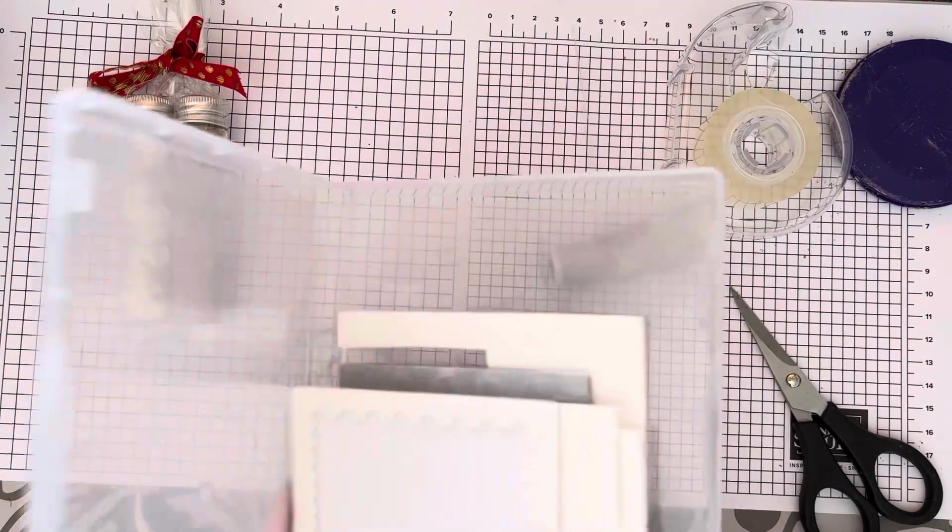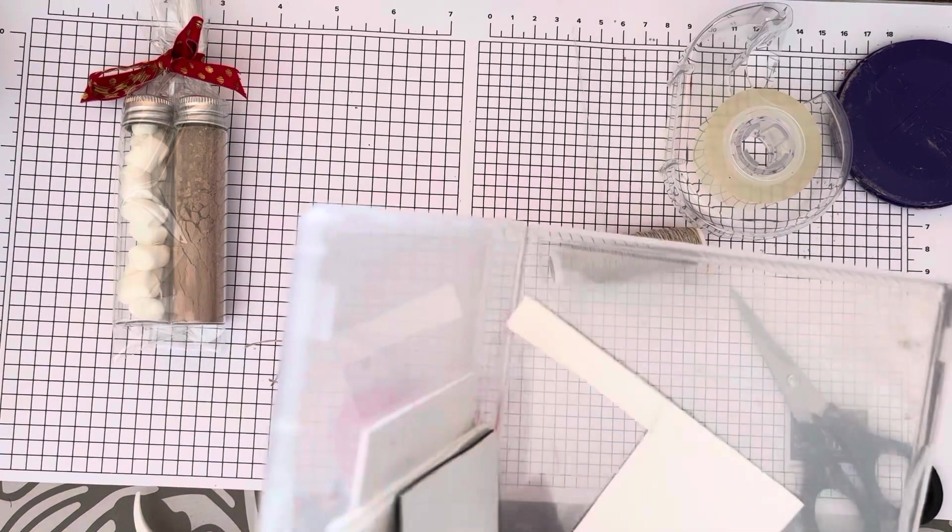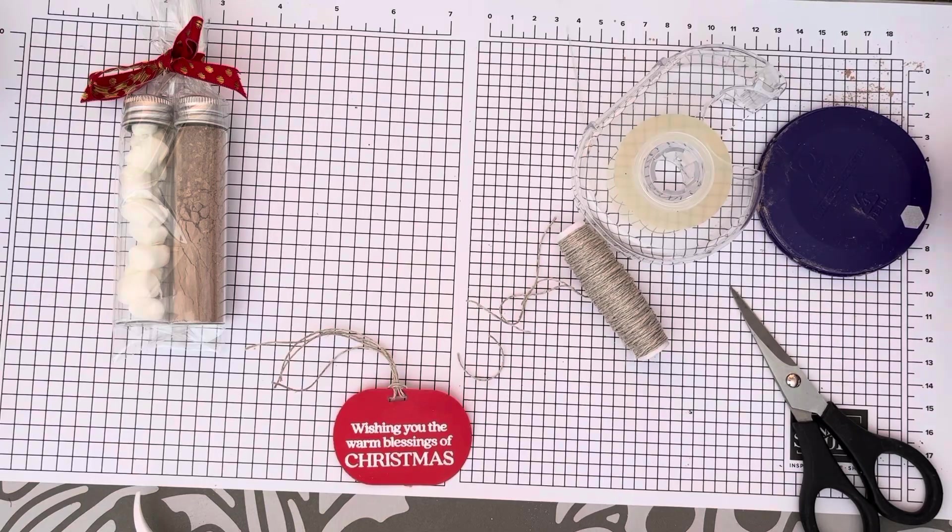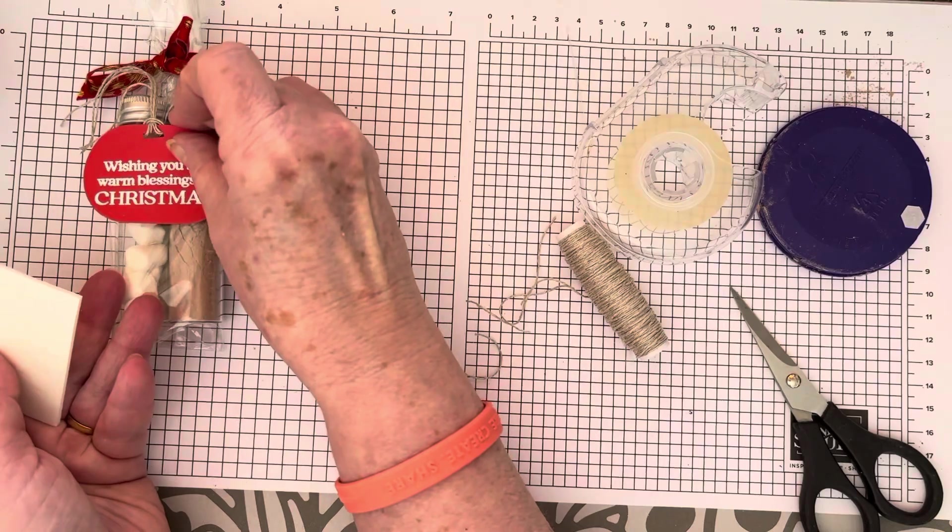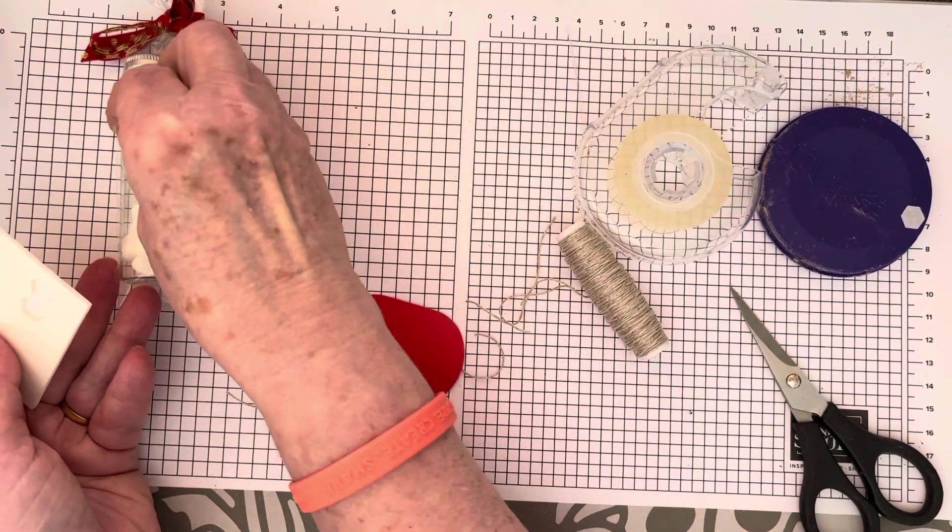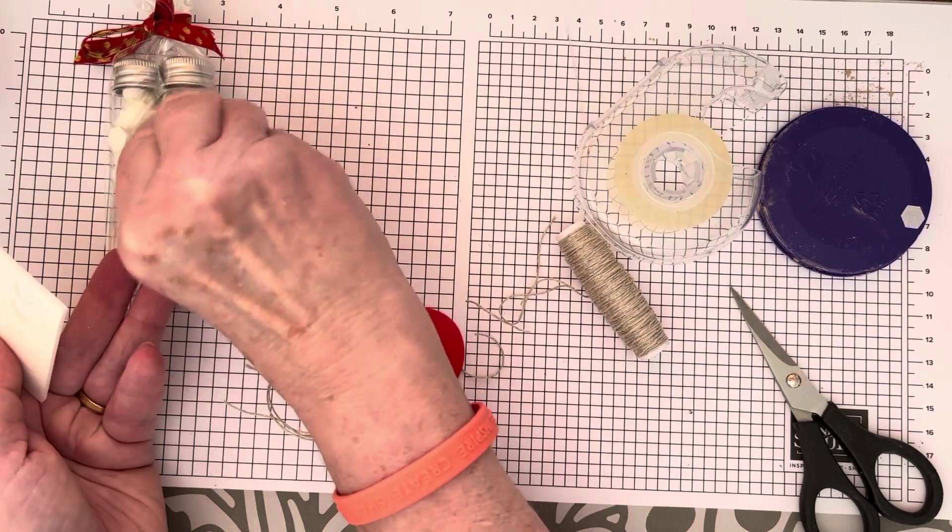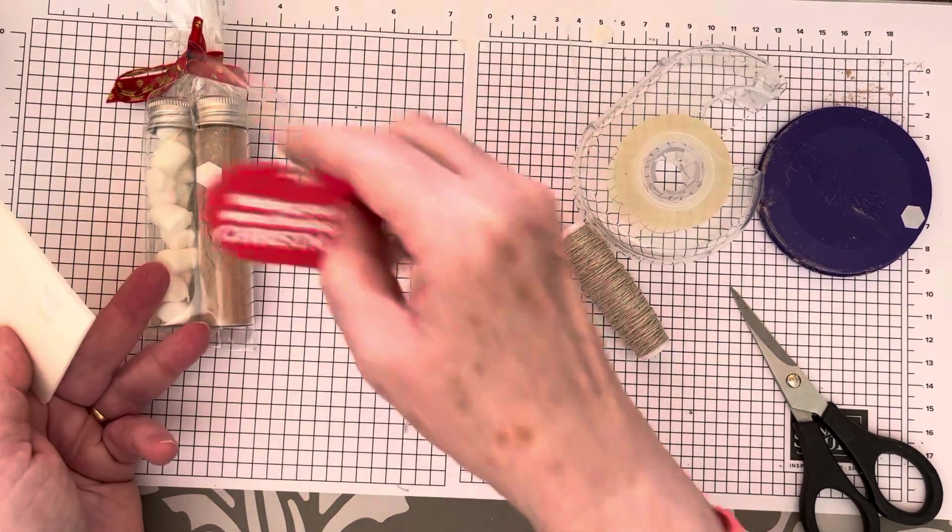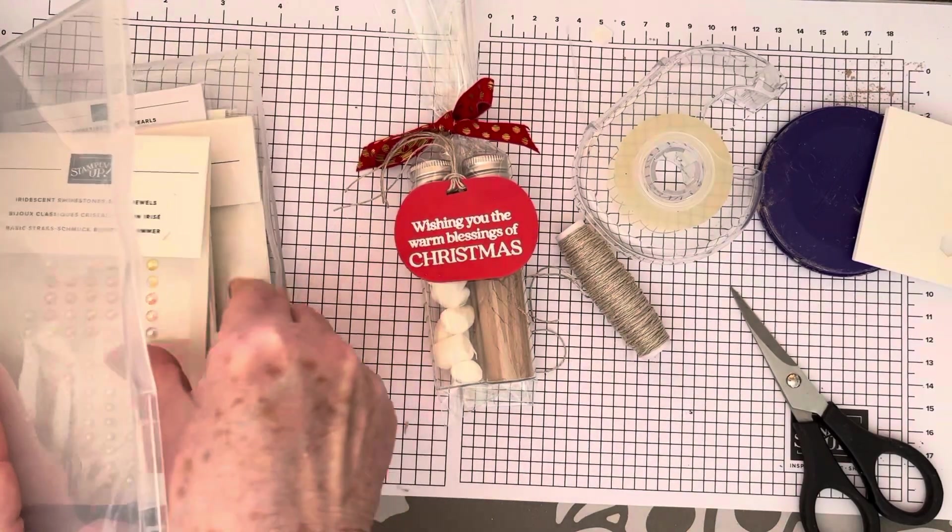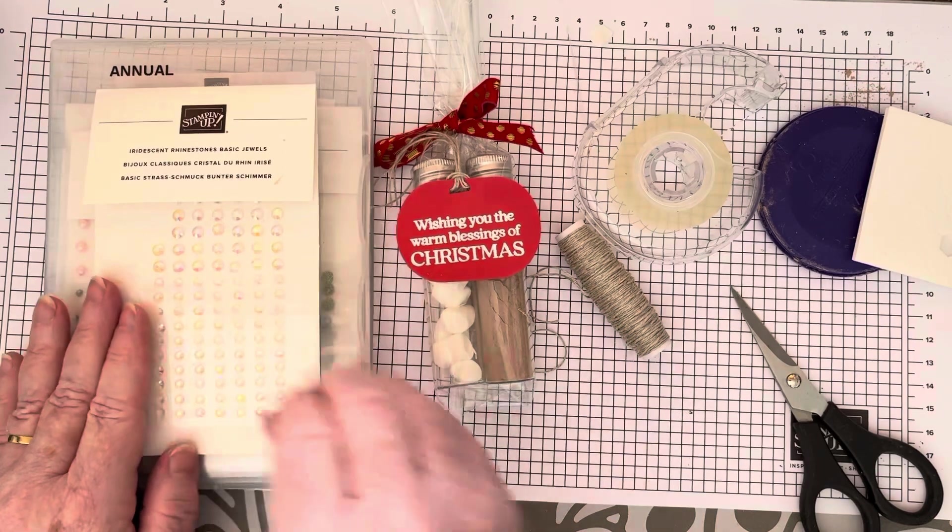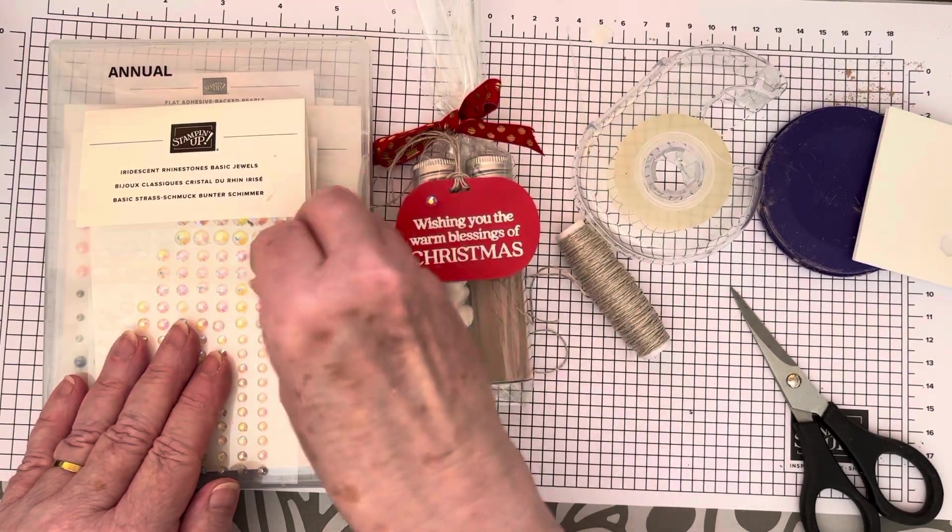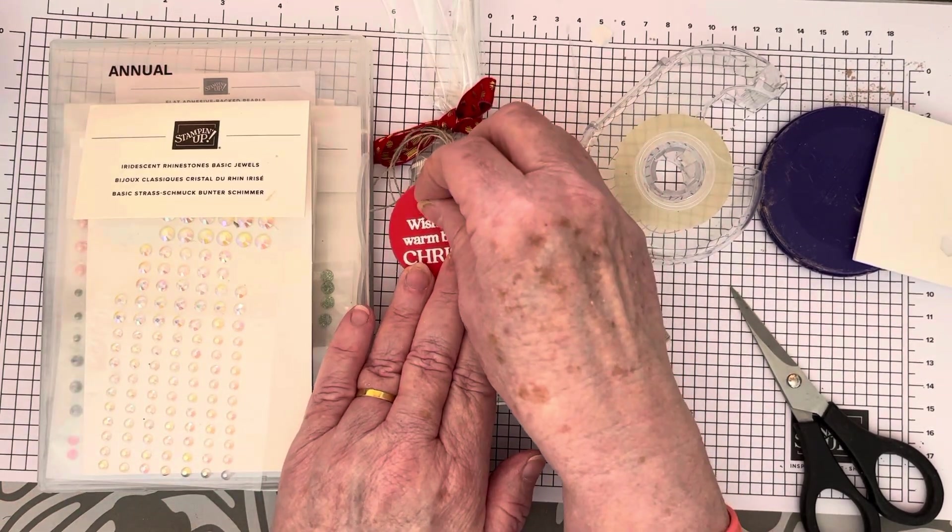I'm just going to get my dimensionals. Oh here they are, told you everything's everywhere. I've got some dimensionals here and I'm just going to stick it on the front there. I'm just going to put the dimensional there and place that there. And I'm going to get out these iridescent rhinestones and I'm going to put a couple of the medium size just along the top here. I have my pick tool, so there you are.